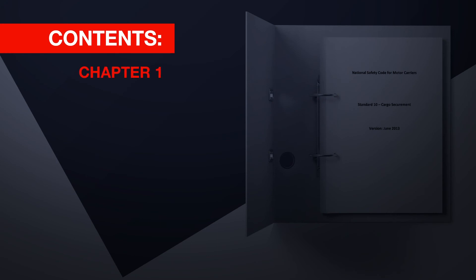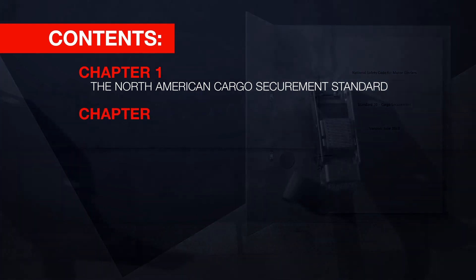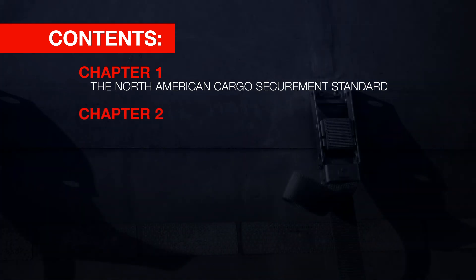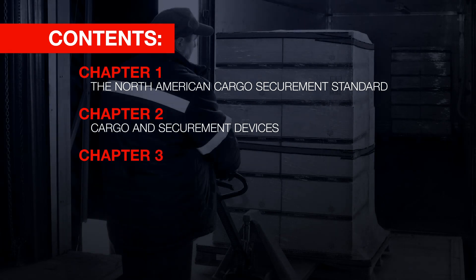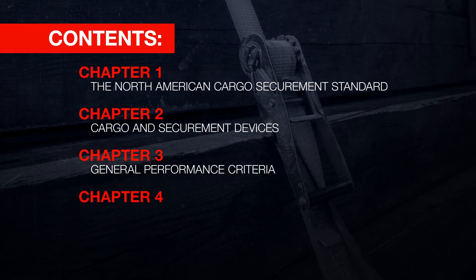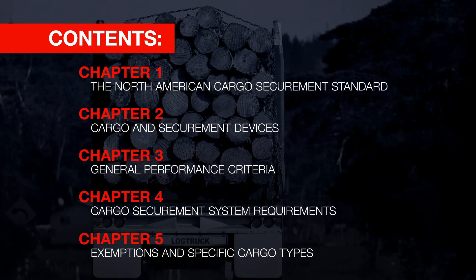Information in the course will be presented in five chapters. Chapter 1, the North American Cargo Securement Standard. Chapter 2, Cargo and Securement Devices. Chapter 3, General Performance Criteria. Chapter 4, Cargo Securement System Requirements. And Chapter 5, Exemptions and Specific Cargo Types. Let's begin.